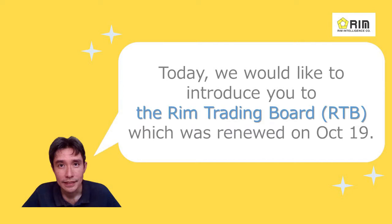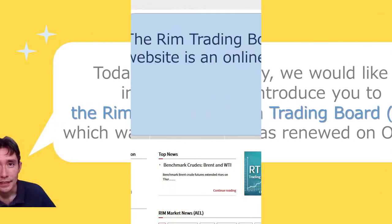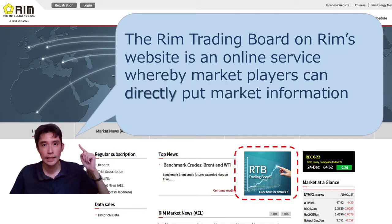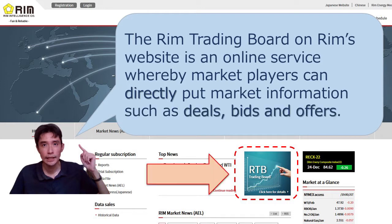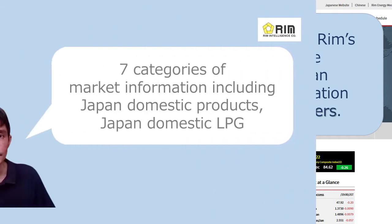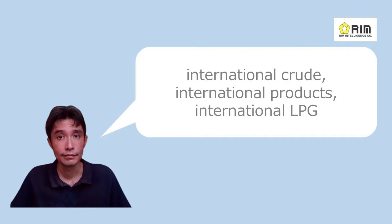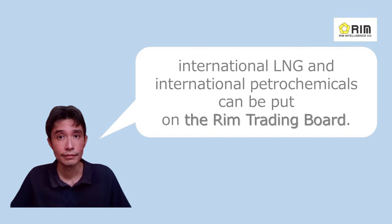The RIM Trading Board was renewed on the 19th of October this year. It is an online service on RIM's website whereby market players can directly put market information such as deals, bids and offers. Seven categories of market information — including Japan Domestic Products, Japan Domestic LPG, International Crude, International Products, International LPG, International LNG, and International Petrochemicals — can be put on the RIM Trading Board.